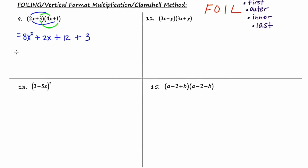Now let's assess if there are any like terms. In the middle, the 2x and the 12x are like terms, giving a net of 14x. So our final answer would be 8x squared plus 14x plus 3.